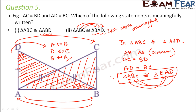You just need to visualize the two triangles and find out: if you want that triangle to overlap with triangle ABC, which point will fall over which point? That is how you find the correspondence.